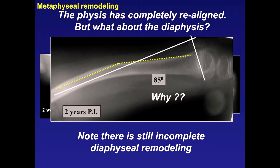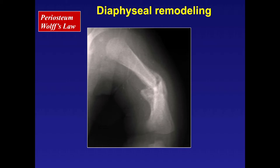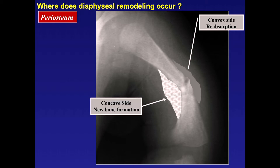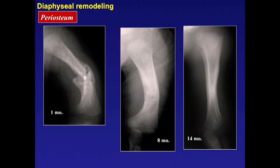Remodeling also depends on the individual's age. This infant has tremendous remodeling capacity and by 14 months is completely remodeled. This occurs by Wolff's Law: bone remodels in response to stress—on the convex side you get reabsorption, on the concave side new bone formation. Diaphyseal remodeling: in the upper extremity, most occurs distally and proximally; in the lower extremity, around the knee.